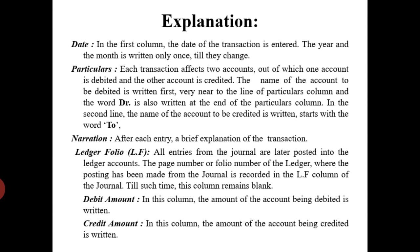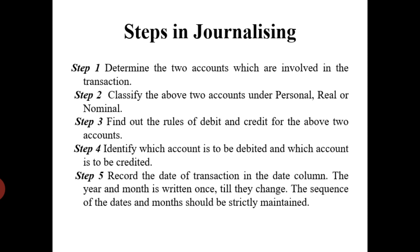These are the columns in which you need to write the different aspects of each transaction. Steps in journalizing: first, determine the two accounts which are involved in the transaction — which one should be debited and which one should be credited, based on the double entry system. Step 2: classify the above two accounts under personal, real, and nominal account categories. Personal account, real account, and nominal account rules are part of the double entry system.